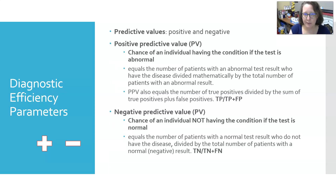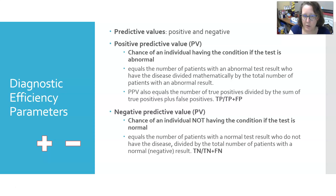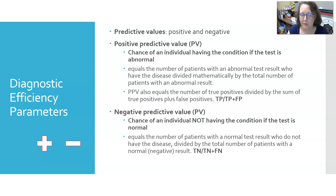From that, we can calculate positive predictive value, negative predictive value, diagnostic sensitivity, and diagnostic specificity. The positive predictive value is the chance of an individual having the condition if the test is abnormal. It equals the number of patients with an abnormal test result who have the disease divided by the total number of patients with an abnormal result — or equivalently, true positives divided by the sum of true positives and false positives.